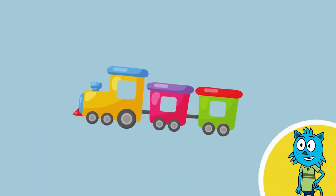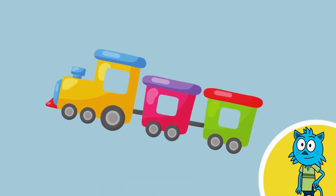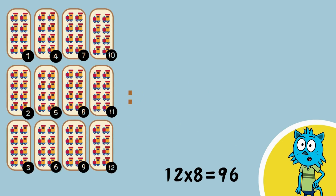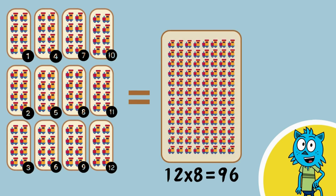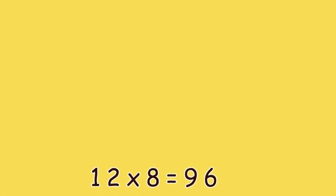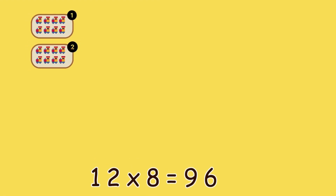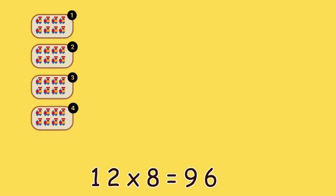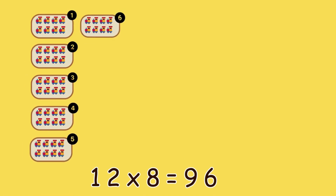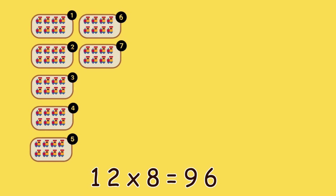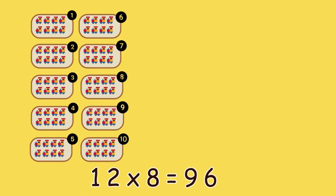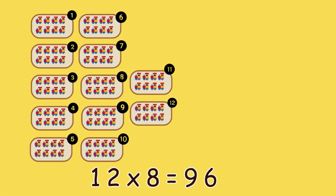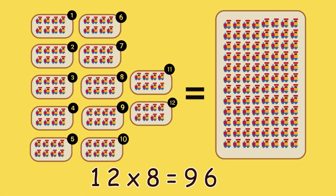Finally, let's count toy trains. Twelve groups of eight toy trains equals ninety-six toy trains. Twelve times eight — one, two, three, four, five, six, seven, eight, nine, ten, eleven, twelve — is ninety-six.